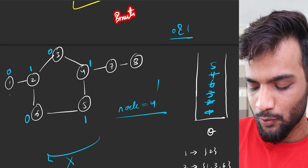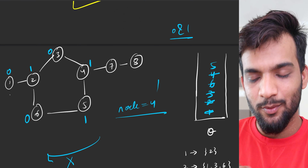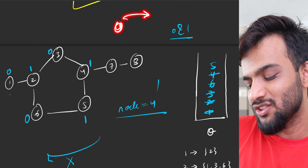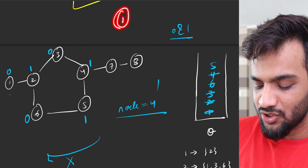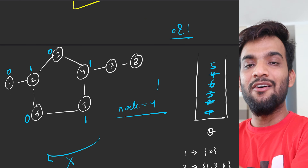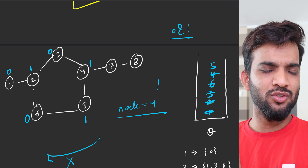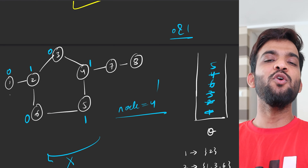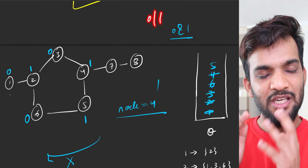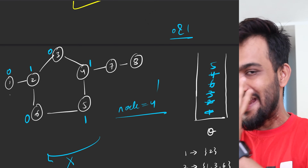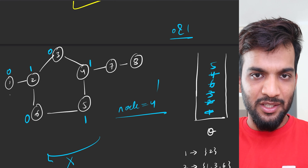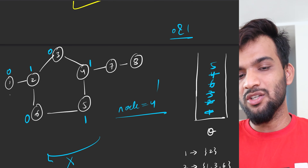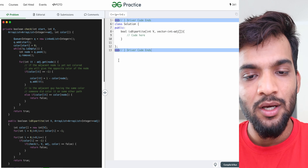The intuition is simple brute force. Start by coloring a node with zero, and whenever you find an adjacent node, give it the opposite color. During traversal, if at any moment two adjacent nodes end up with the same color, it is not bipartite. It's simply a brute force of filling colors zero and one while ensuring no two adjacent nodes share the same color.